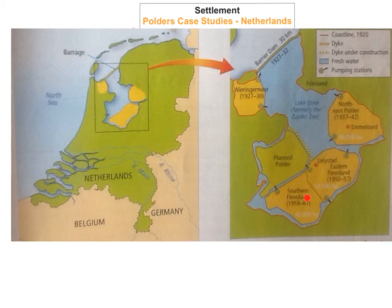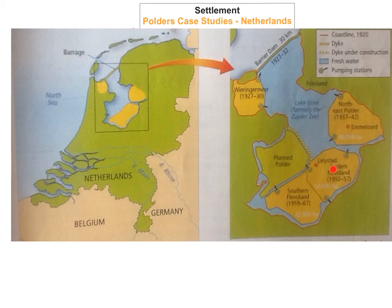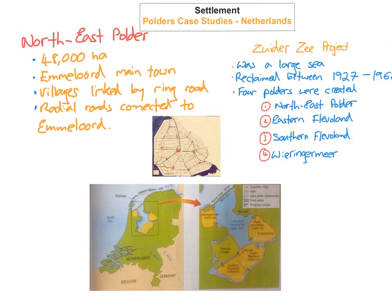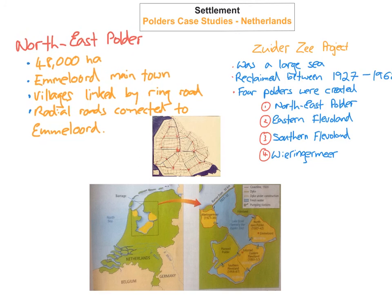Inside the Polders, they built all the roads and drained all the channels, using diesel and electricity-powered pumps to control the ground water levels. Then they built settlement on them — roads, farms, villages, all planned out — building houses and settlements on the different Polders. The Polder we were talking about was the North East Polder, which you can see up in the northeast.